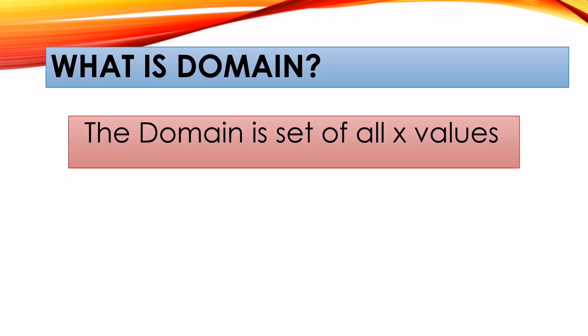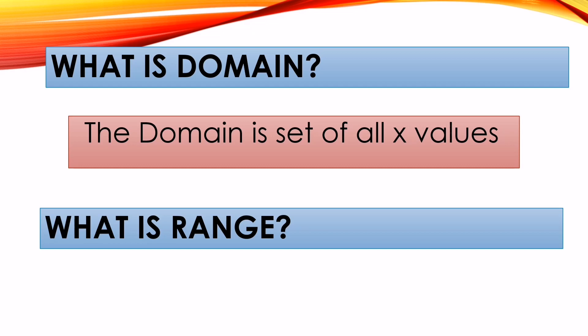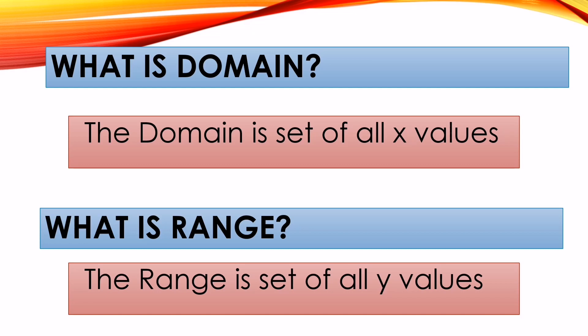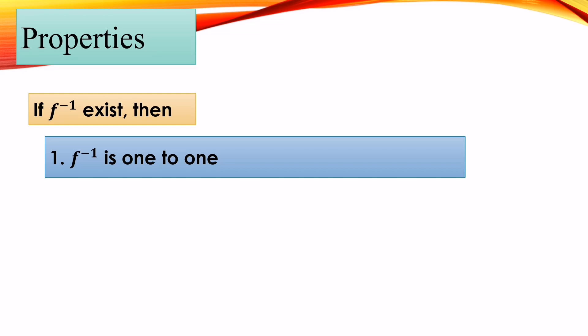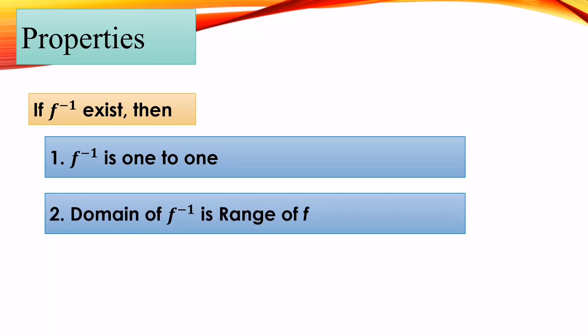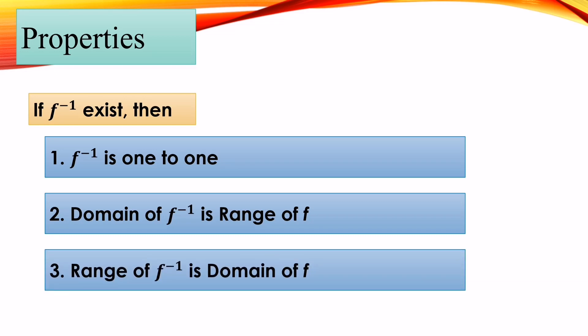What is domain? The domain is the set of all x values. What is range? The range is the set of all y values. There are properties in identifying the domain and range of inverse functions: if the inverse of the function exists, then the inverse is one-to-one. The domain of the inverse is the range of the function — meaning the original range of the function becomes the domain of the inverse. The range of the inverse function is the domain of the function — meaning the original domain of the function becomes the range of the inverse function.